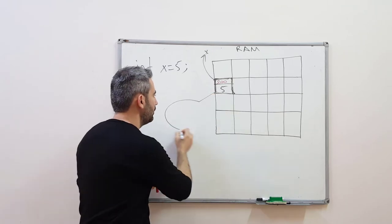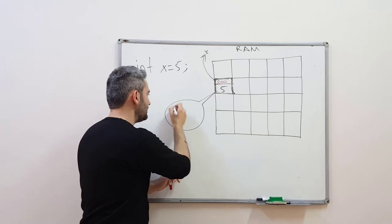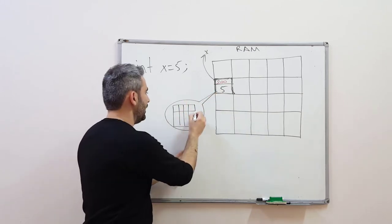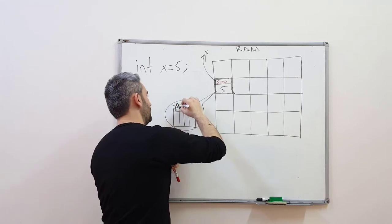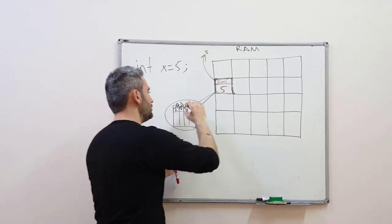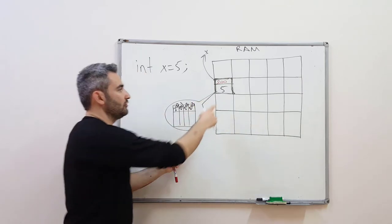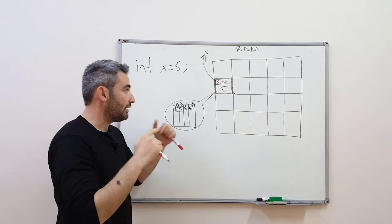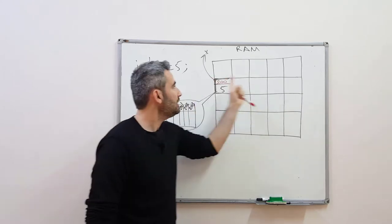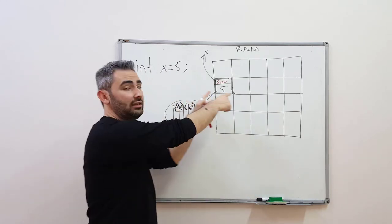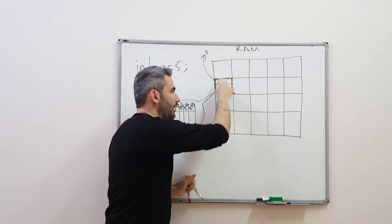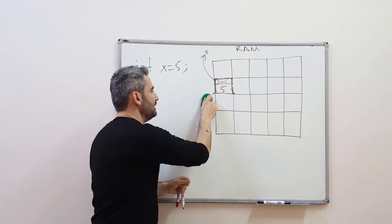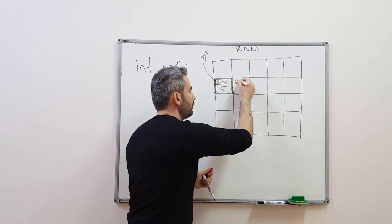If you magnify this square here, you will see that it forms from 4 bytes, because this integer takes 4 bytes. So here is 200, here is 201, here is 202, and this room is 203. This integer takes 4 bytes, 4 rooms. Remember, every byte has an address. For demonstration purposes, assume each square here as 4 bytes. So if we want to place an integer next to this room, the address of that room will be 204.